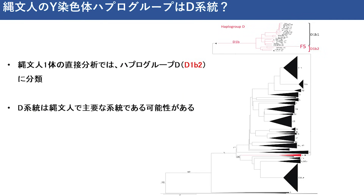この研究では船泊23号の高深度ゲノム以外にもう1体の縄文人のゲノム分析を行っています。船泊23号は女性ですが、もう1体は男性となります。縄文人はハプログループのDを持っているということが推測されていましたが、実際にそれを証明した人はいませんでした。我々は縄文人男性のゲノムからY染色体のハプログループを明らかにしました。その結果この個体はD1b2に分類されることが明らかとなりました。